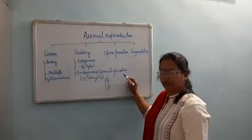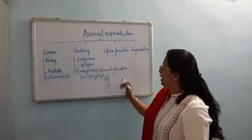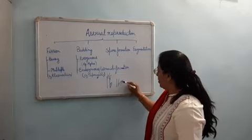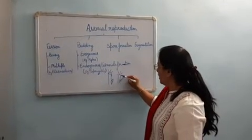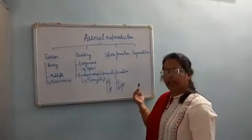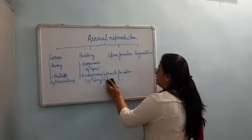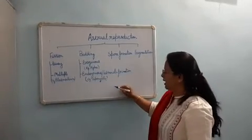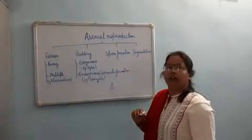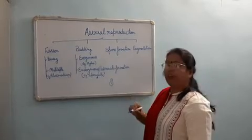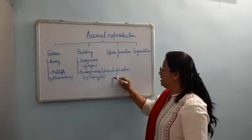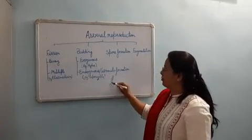First we discuss exogenous budding. In Hydra, an outgrowth — a bud — is formed. This bud slowly develops into a new individual, giving rise to another Hydra, and then detaches itself from the body of the parent to start behaving like a new individual. Another example is yeast, a unicellular organism that reproduces by budding. From the tip of the cell the bud arises and develops into a new individual, but in most cases it does not detach itself from the parental body, forming a chain-like structure.